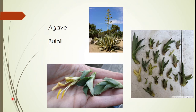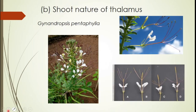In a plant called agave, we find the flower bud getting modified into a vegetative bud. The conversion of a flower bud to a vegetative bud can be seen in this plant.